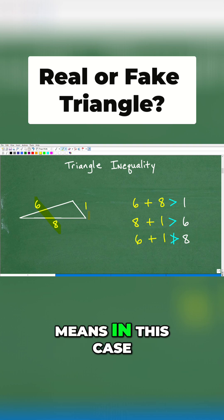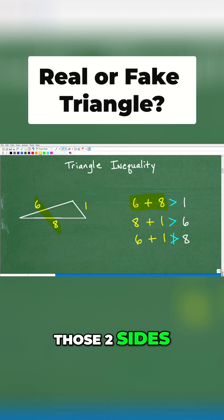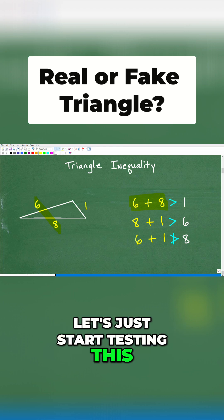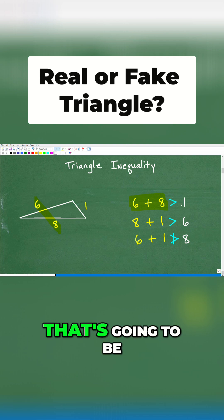So what that effectively means in this case is if we have these two sides, six and eight, is that greater than that last remaining side? Well, let's just start testing this. Six plus eight is going to be greater than one, right? So this works out. That's good. No problem there.